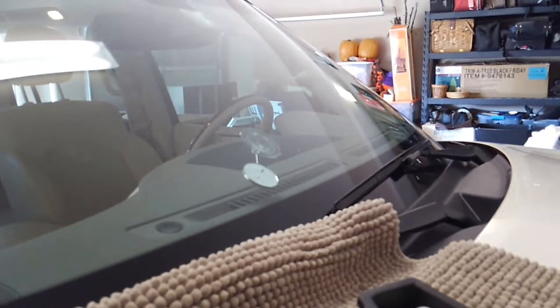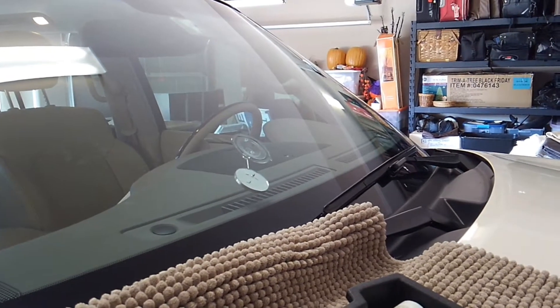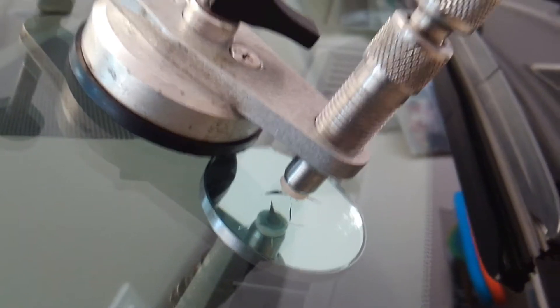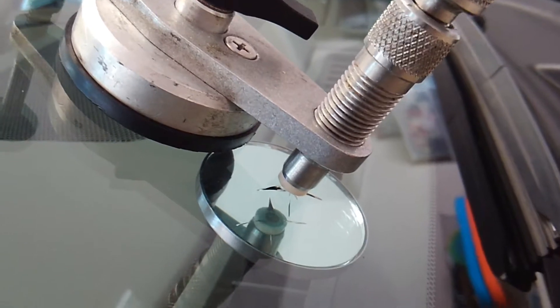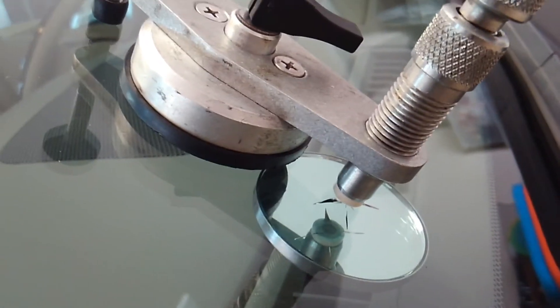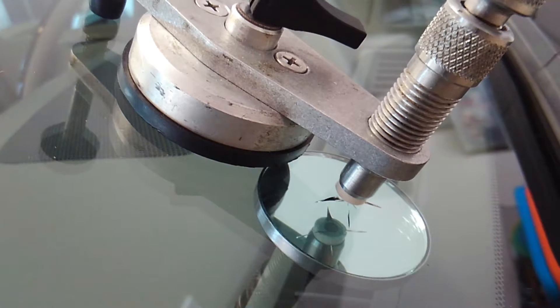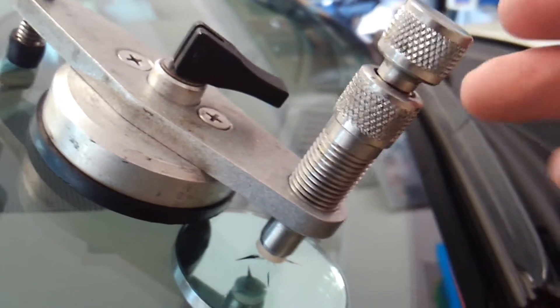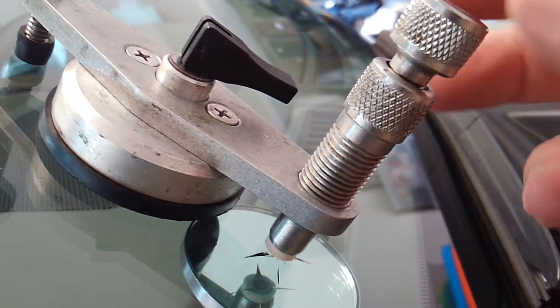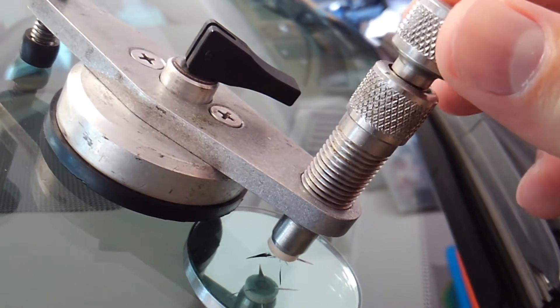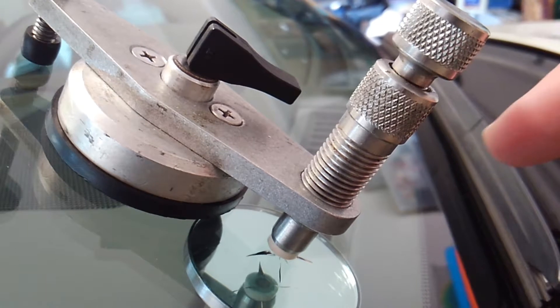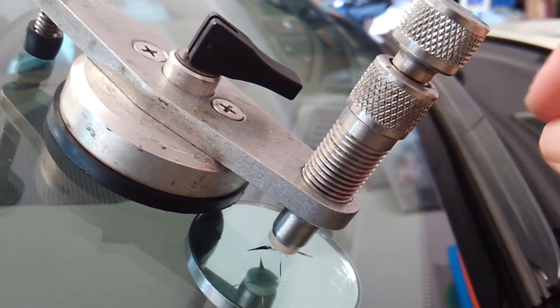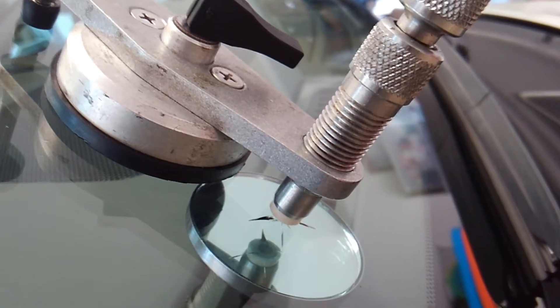I'll show you each step along the way. Now we have the bridge assembly set up right over the crack where I drilled. I put resin into the injector, and as I screw the plunger down, it puts pressure on the liquid and forces it into the damaged area and cracks.